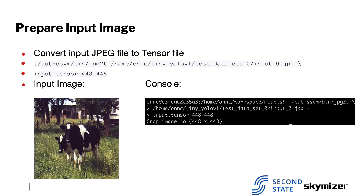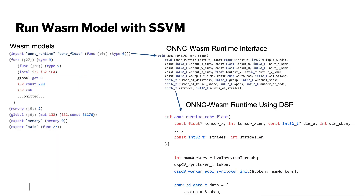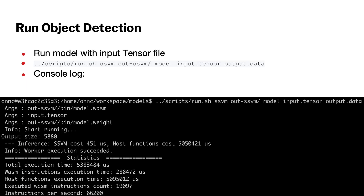In the second step, we have to crop and transform the input image file from JPEG to the desired input tensor format. The image on the left side is the input image for this demonstration. After you type the command, you can see the result as shown in the console output. In the last step, run Watson models with SSVM execution runtime. When SSVM encounters the Onyx runtime convolution float function, it will dispatch the AI operator to the Onyx Watson runtime library. Use the run script and pass the arguments including a Watson model, a model weight, and an input tensor. You can find the output data in the same folder.